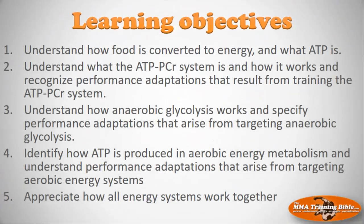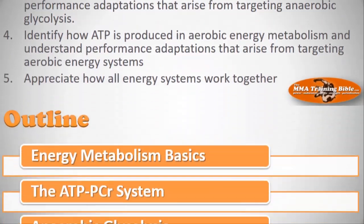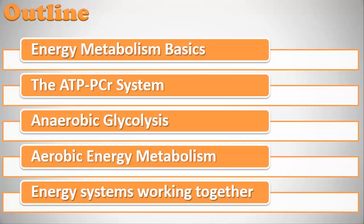Here are the learning objectives. First, understand how food is converted to energy and what ATP is. Second, understand the ATP-PCR system — what it is, how it works, and how to recognize performance adaptations from training it. Third, understand how anaerobic glycolysis works and specify its performance adaptations. Fourth, identify how ATP is produced in aerobic metabolism and understand its adaptations. Finally, appreciate how all these systems work together to power your efforts in the cage.